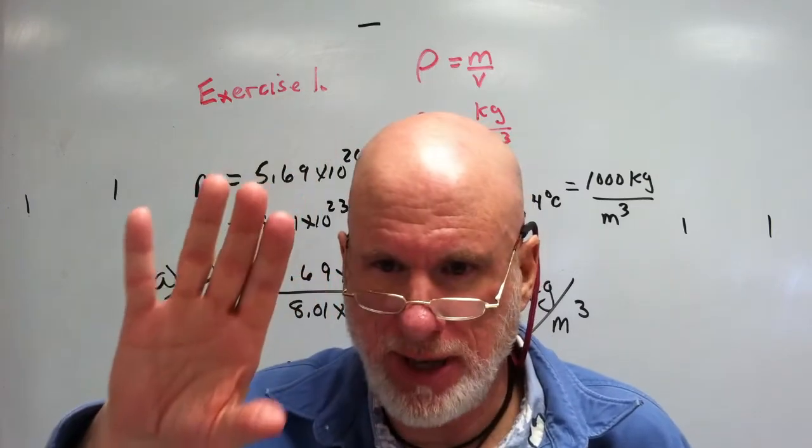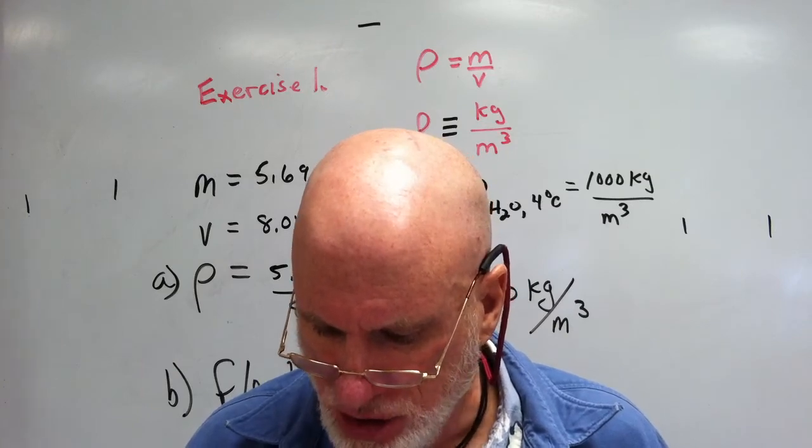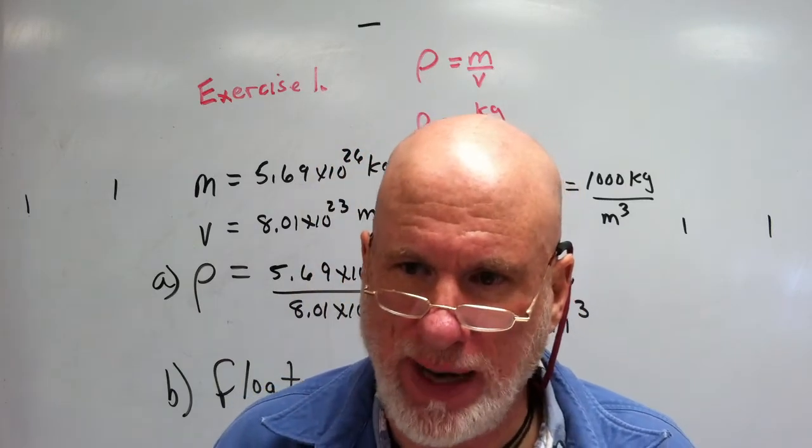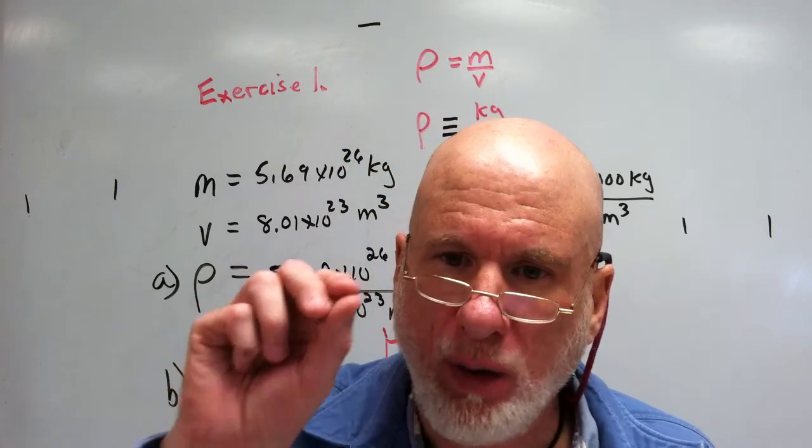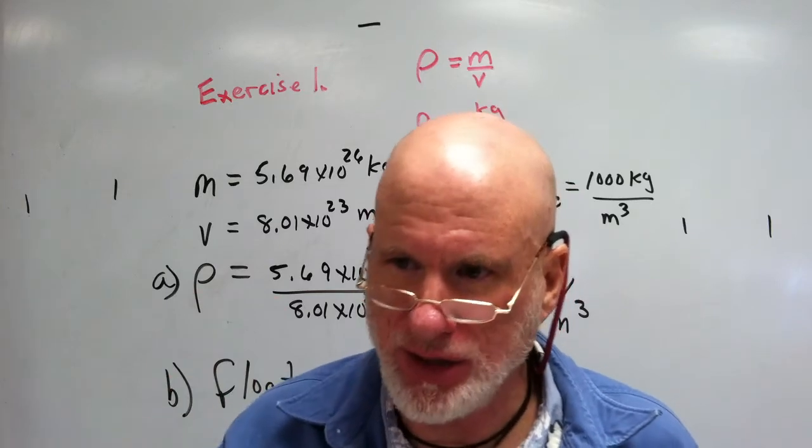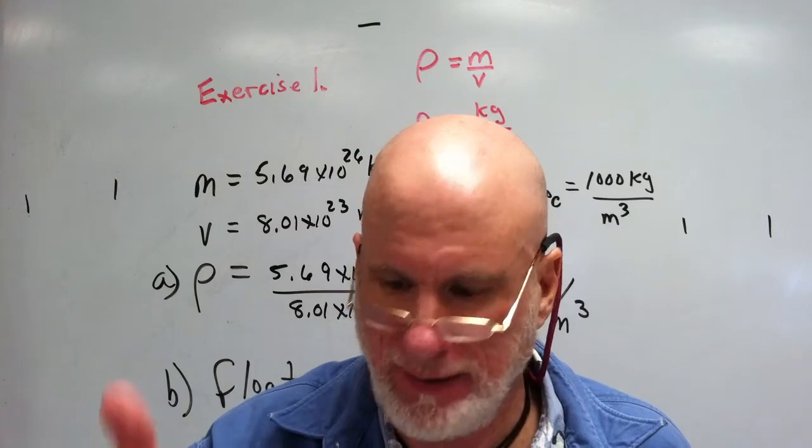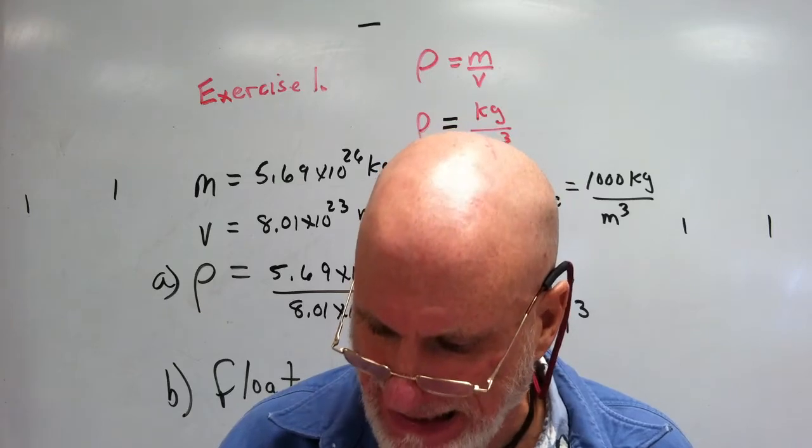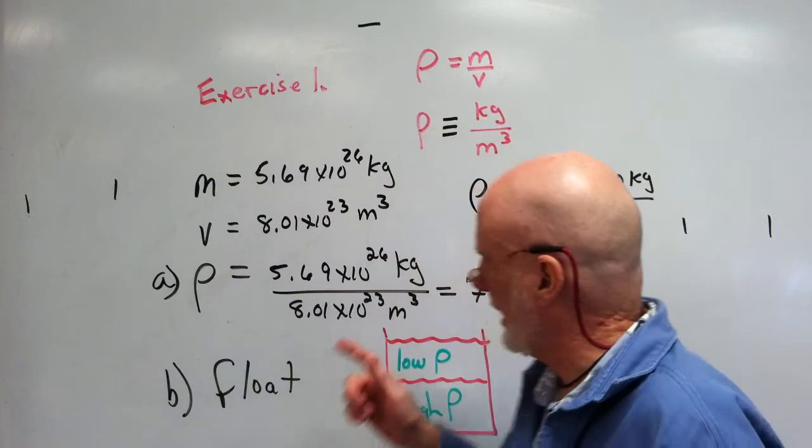For instance, there was a problem that I did on one of the lecture videos. Let me just read this: While doing dishes, ZV drops his 3 times 10 to the negative 3 kilogram platinum wedding band into dishwater, displacing 1.4 times 10 to the negative 7th cubic meters. So right there you have a small mass, 3 times 10 to the negative 3 kilograms, and 1.4 times 10 to the negative 7 cubic meters. So you're going to be using a lot of scientific notation.